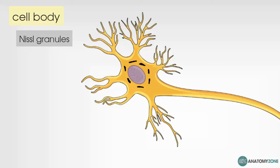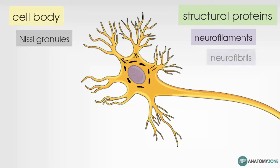We've also got structural proteins within the nerve cells. You've got these neurofilaments, which are assembled into the larger neurofibrils. And finally within the cell body worth mentioning is the neurotubules. These neurotubules are responsible for cellular transport, bringing stuff to and from the cell body.